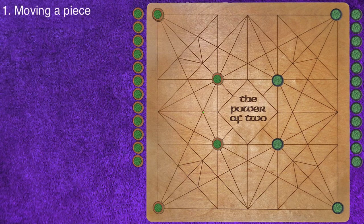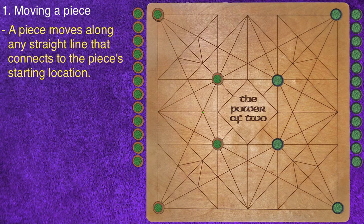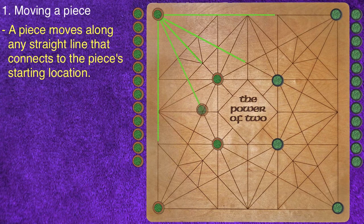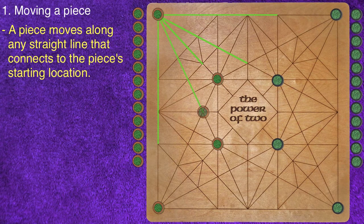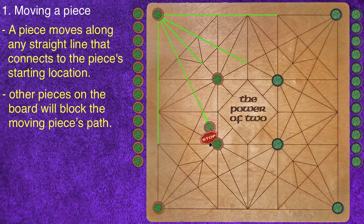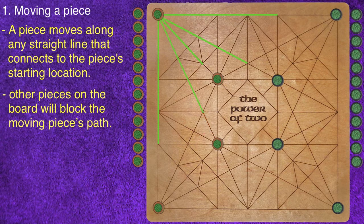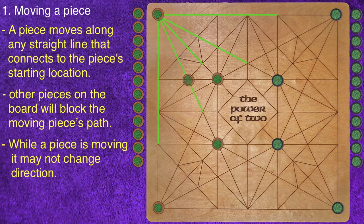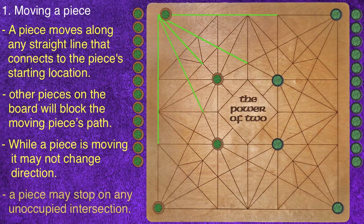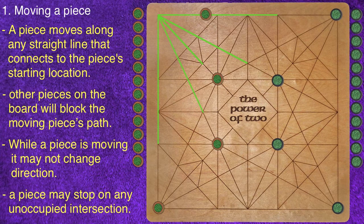Step 1: Moving a piece. A piece may move as far as the player wants along any straight line that connects to the piece's starting location. If there is another piece on the selected path, that piece blocks the moving piece. While moving a piece, the player may not change the piece's direction of travel. The move step ends when the player stops on any unoccupied intersection.